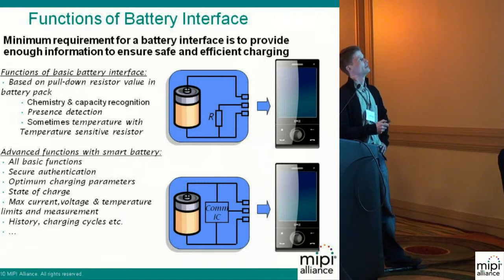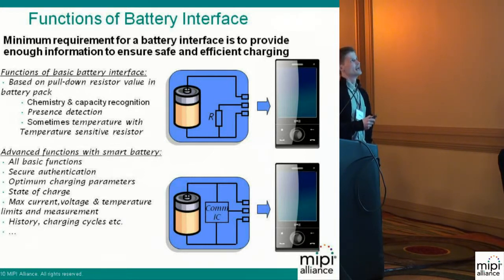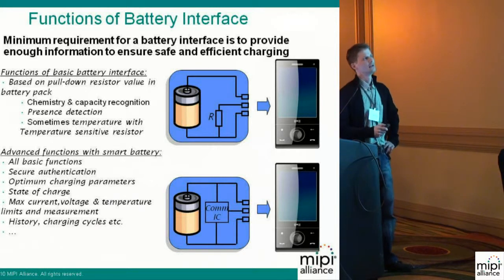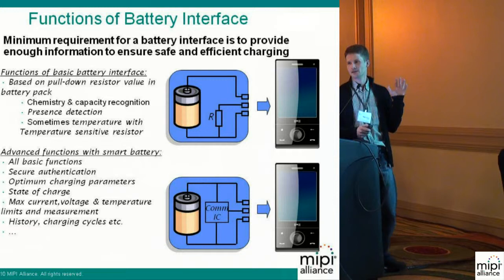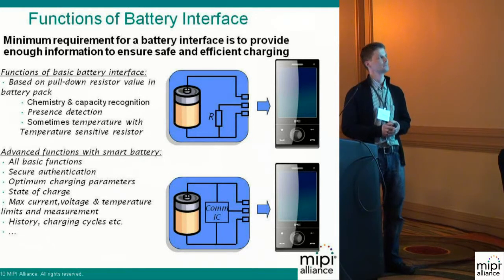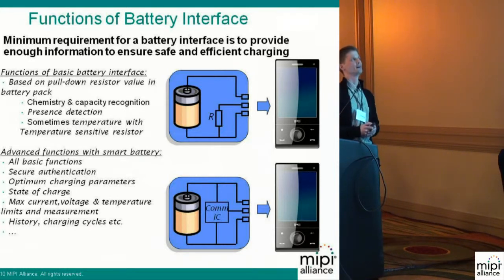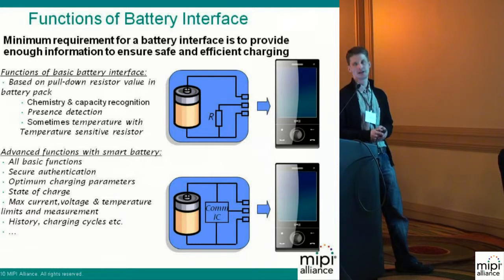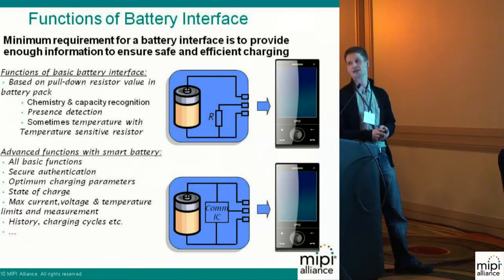We need to ensure that we get enough information out of the battery pack to make our charging as efficient as possible and at the same time safe. In order to do that, you have to identify what kind of battery you are charging. Most batteries today have a very simple identification mechanism, usually based on a pull-down resistor inside the battery pack. As you can imagine, it's very easy to copy that — you just measure the original battery's pull-down value, put in your own cell with a similar resistor, and you're set.